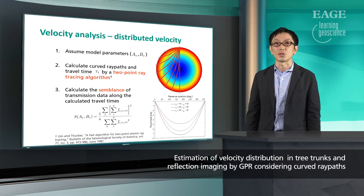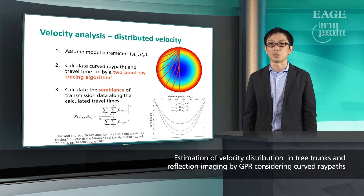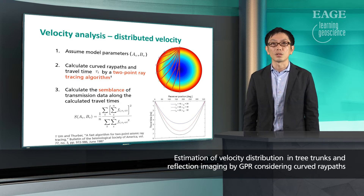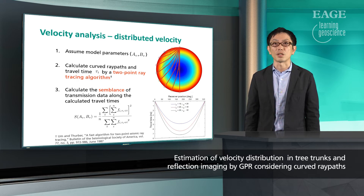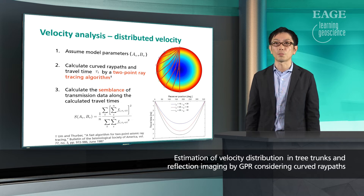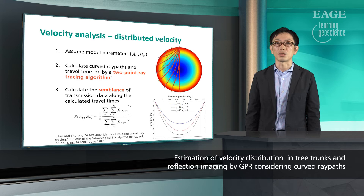However, because now the object has a velocity distribution, ray paths must be curved, as shown in this figure. So we use ray tracing to calculate the length and travel time along the curved ray paths. Then we calculate semblance as a function of two model parameters, so the result will be a two-dimensional distribution of semblance values. By finding the parameters that give the maximum semblance value, we can estimate the velocity distribution.